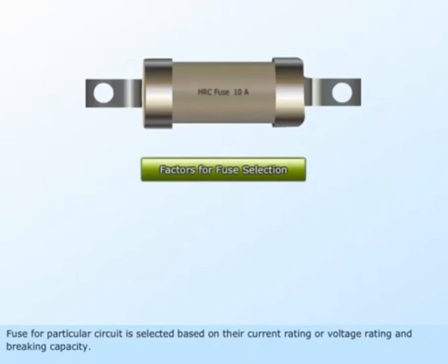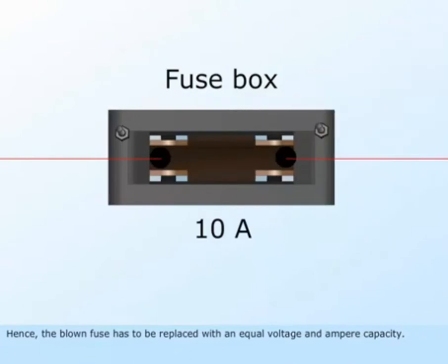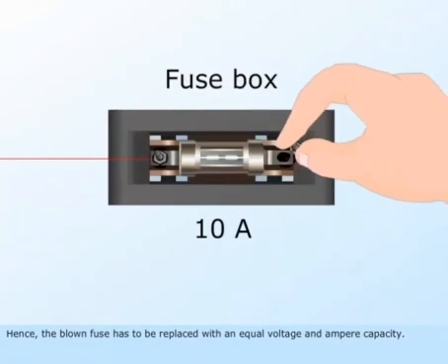Fuse for a particular circuit is selected based on the current rating or voltage rating and breaking capacity. Hence, the blown fuse has to be replaced with an equal voltage and ampere capacity.